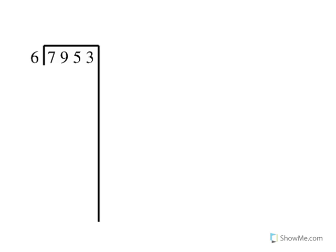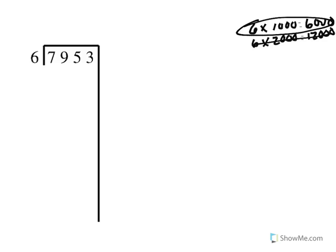Let's take a look at another problem. Here I have 7,953 divided by 6. With this number, the 7 is in the greatest place value, which is 1,000. So I'm going to start by multiplying 6 times 1,000, which equals 6,000. Then 6 times 2,000, which equals 12,000. Now 12,000 is too much to subtract from 7,953, so I'm going to use the 6,000.